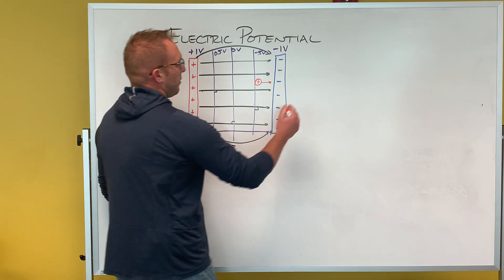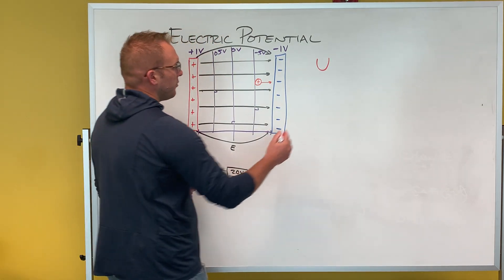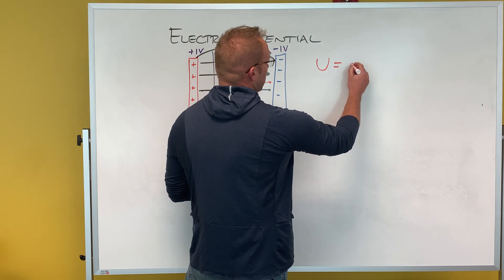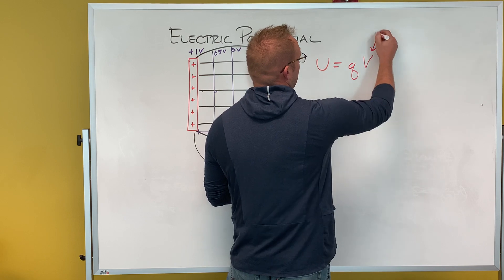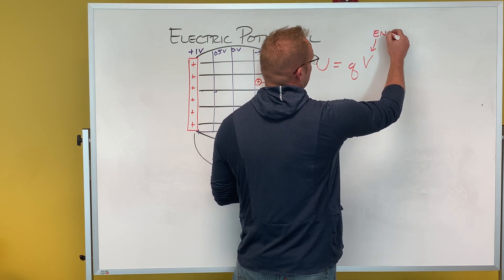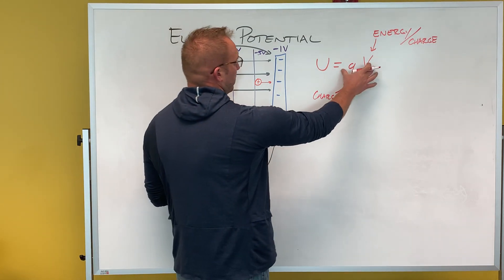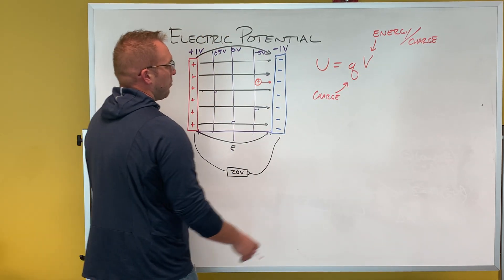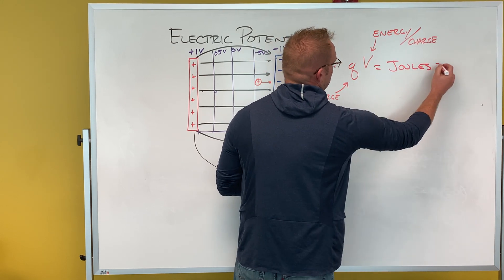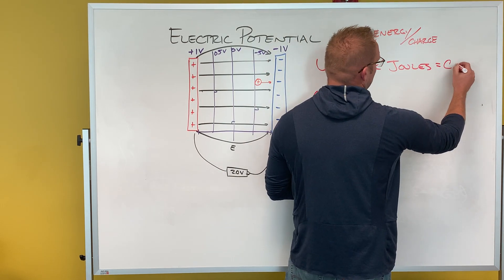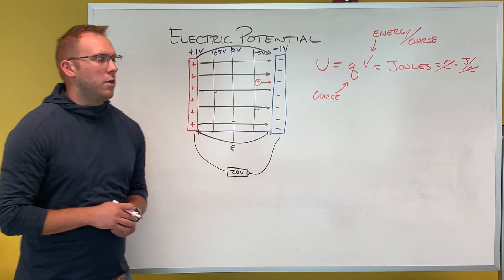Okay, so the energy is going to be symbolized with U. The energy is going to equal the charge times the voltage. Remember this is energy per unit of charge. So to find energy, we need to multiply those two together. That would give me my energy in joules, because we had coulombs times joules per coulomb. Coulombs cancel out and we're left with joules.